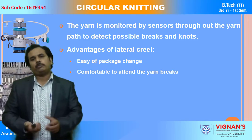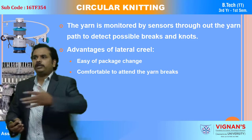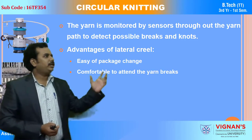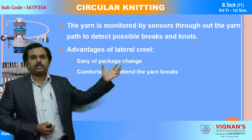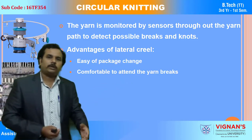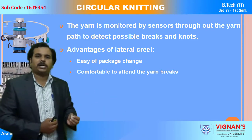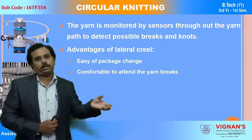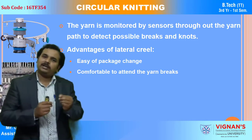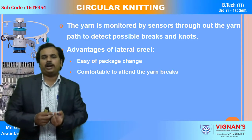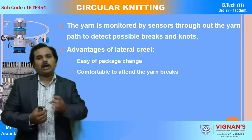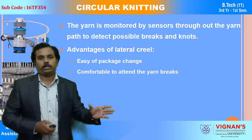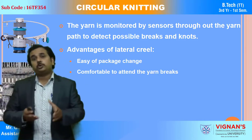It is also very comfortable to attend the yarn breakages. We can monitor all the packages easily. If the yarn breaks or is not coming to the knitting elements, the machine automatically stops. There are LED signal lamps — red bulbs — which glow to show which package is exhausted or which yarn is broken, so we can directly go to that respective package and change it accordingly. This is the advantage of being compatible to attend yarn breakages.